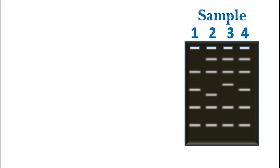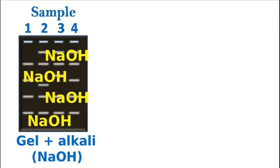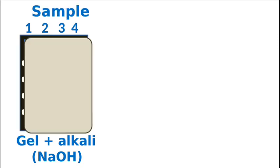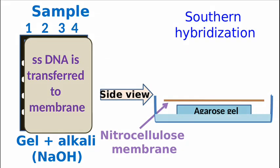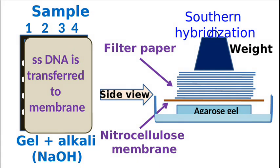Once separated, the DNA fragments in the gel are denatured using an alkali. The alkali breaks the hydrogen bonds between the DNA strands. As a result, the DNA in the gel now becomes single-stranded. These fragments are then transferred to a membrane by applying pressure.